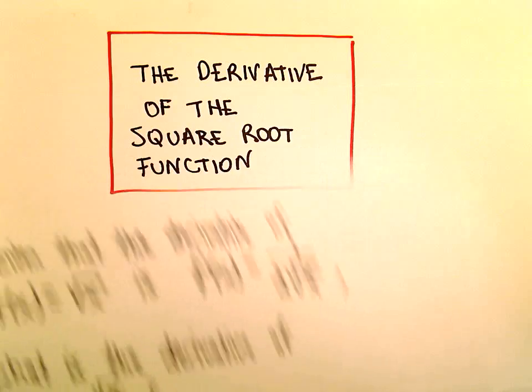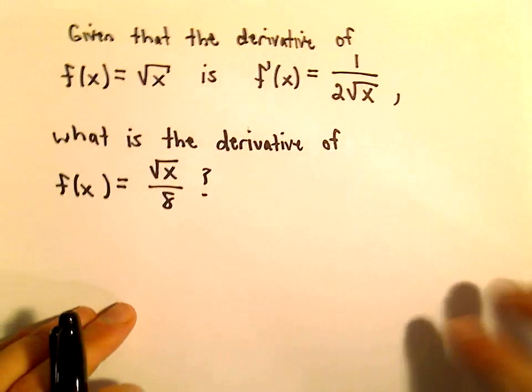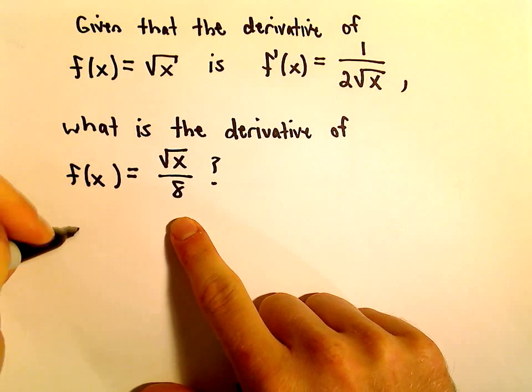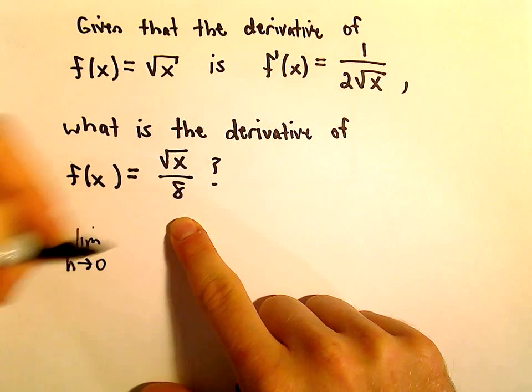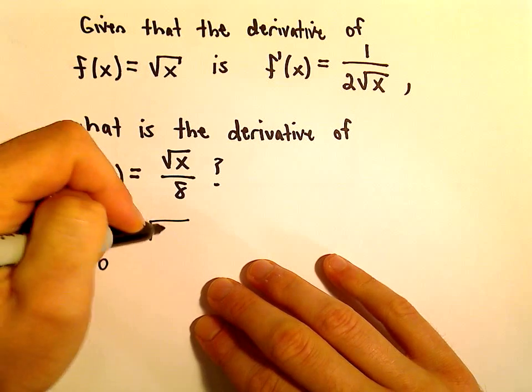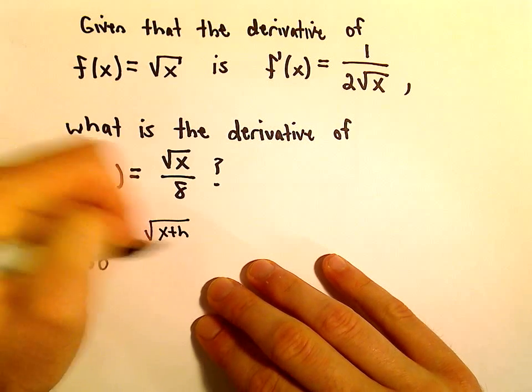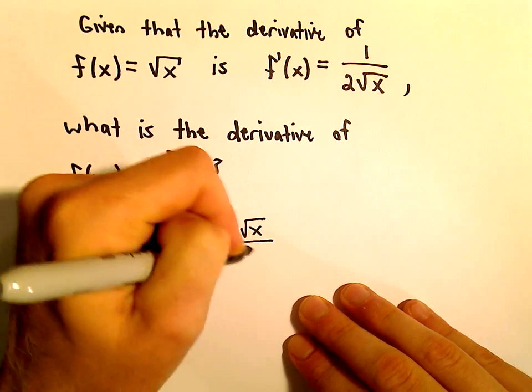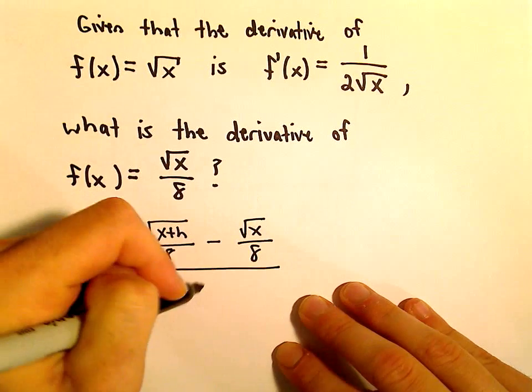So, just to kind of justify this a little bit, if we use the definition of the derivative on our new function, we would have the limit as h goes to 0, and then we would have the square root of x plus h over 8 minus the square root of x over 8 all over h.